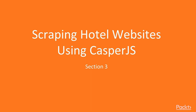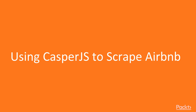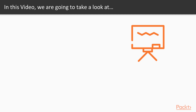Welcome back to the new section: Scraping Hotel Website Using Casper.js. In this video, I will help you set up a Casper.js script to scrape Airbnb.com, then save the data into two different files — a JSON file and an HTML file.